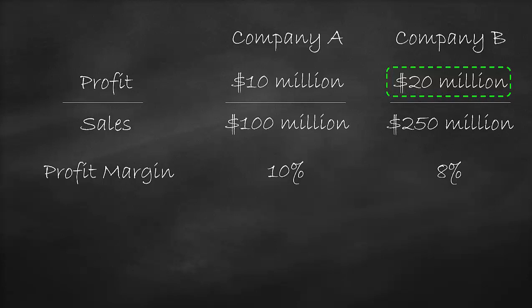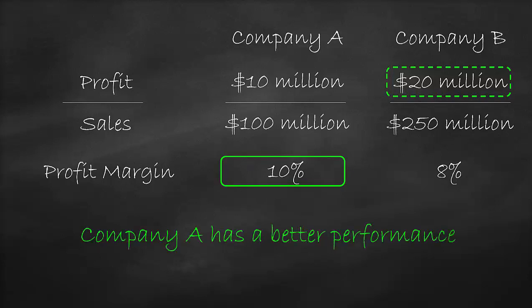Therefore, Company A is better than Company B, as it has a higher profit margin. Which means, for every $100 of sales, Company A generates a net profit of $10, after paying off all expenses, while Company B generates a net profit of $8, after paying off all expenses.